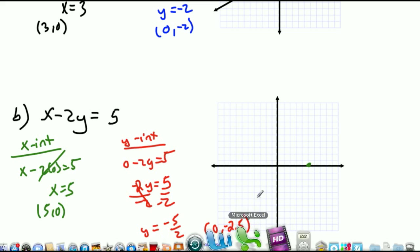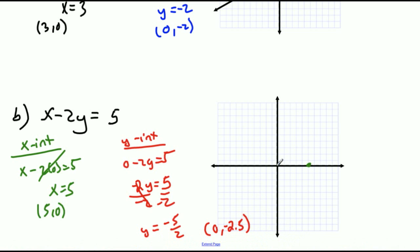Okay, so 0, negative 2.5 - negative 2, then a half. Bam. So we can go ahead and graph that. So that guy would go something like that. And there it is.